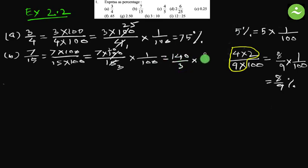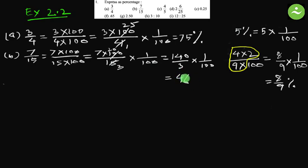So we have 140 by 3, multiplied by 1 by 100. Now divide 140 by 3: 3 into 14 is 4 remainder 2, so we get 46 and 2 by 3. The answer is 46 and 2/3 percent.